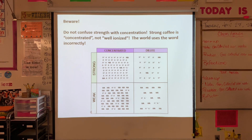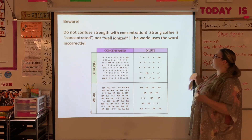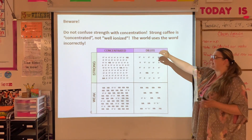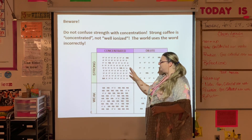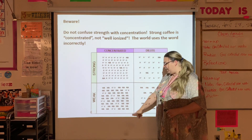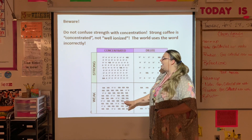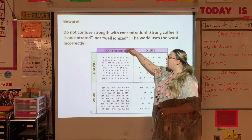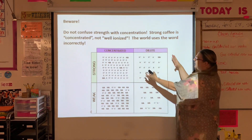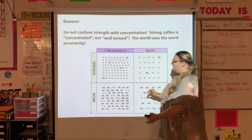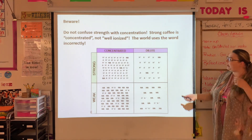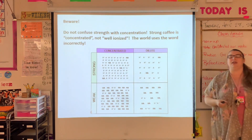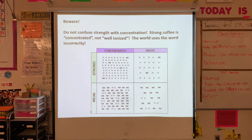Be very careful: strength and concentration are different things when talking about acids. When you say your coffee is strong, you mean it's concentrated — not that it's well ionized. Strong acids are ones that completely ionize or almost completely ionize. Weak acids are ones that do not completely ionize — only select ones ionize. Concentrated means you have a lot of it, no matter what it is. Dilute means you have more water than acid. Strong and weak refer to how well ionized it is; concentrated versus dilute refers to how much of it is acid versus water.